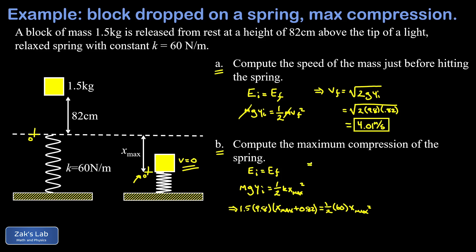And on the right hand side we have one half times k, which is 60, times x max squared. So we end up with a quadratic equation to solve for x max. The way I'm going to think about this is that I'm gathering all the terms over to the right hand side, and that's just because it's nice to have a positive a for the quadratic formula.